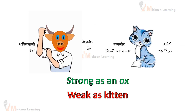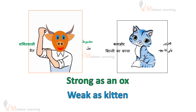Strong as an ox — eek bail ki tira, taakhat var. Weak as a kitten — eek billi ki bachye ki tira, kamzor. Yahaan comparison kis cheese ka ho raha hai? Sprint ka, yani in ki taakhat ka — we are comparing their strength.